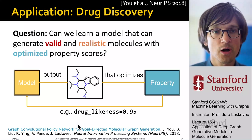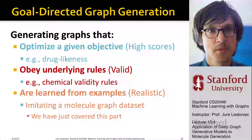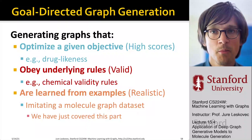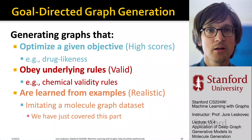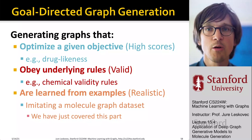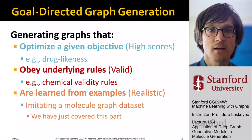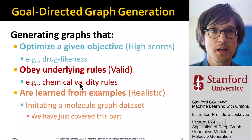Here is a high-level overview of this paper and the novel problem of optimal molecule generation. The goal is to generate graphs that optimize a given objective, like drug likeness, that obey underlying rules — meaning the graphs are chemically valid — and are learned from examples, meaning they look realistic and imitate molecular graphs used for training. The difference here is we don't only want to imitate; we want to generate graphs that are valid and that actually optimize a given criteria, a given black box.